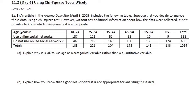These are the last notes for Chapter 11 on using chi-square tests wisely. Example 1 references an article in the Arizona Daily Star with a table about social media. Suppose you decide to analyze these data using a chi-square test. However, without additional information about how the data were collected, it isn't possible to know which chi-square test is appropriate. The data is organized into age groups and whether or not people use social networks.